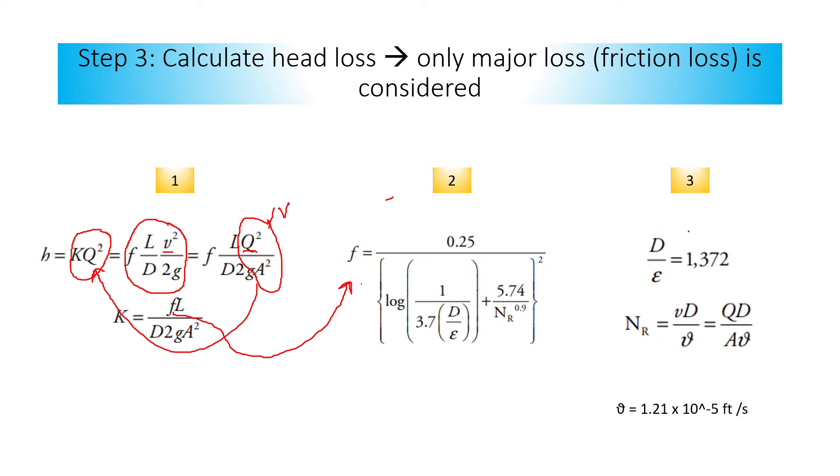Next we have this equation. Since we need d over epsilon in this formula for calculating f, now you have to know this. Actually this is the value from the example that we will do after this, from the previous figure that I showed you.